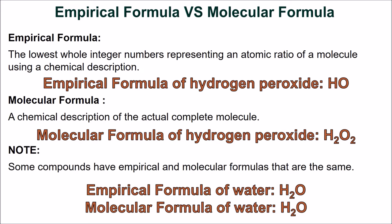The empirical formula for hydrogen peroxide is HO. A molecular formula is the chemical description of the actual complete molecule. The molecular formula for hydrogen peroxide is H2O2. Given the molar mass of a compound and its empirical formula, the molecular formula can be determined by finding the whole number multiplier that will yield the compound's given molar mass. Some compounds, such as water, have empirical and molecular formulas that are the same — the molecular and empirical formula of water is H2O.